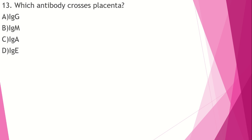Which antibody crosses the placenta? The answer is IgG. IgG crosses the placenta. In acute infection, the antibody produced is IgM. In chronic infection, IgG is produced. IgA is the antibody found in secretions. IgE is involved in anaphylaxis and allergy, and is present at high concentrations in allergic responses.